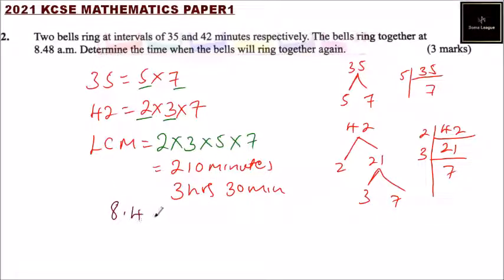You add 3 hours here and 30 minutes here. When you add the minutes, you get 78 minutes. Since one hour is 60 minutes, you carry one hour to the hours column. These become 12 hours, and 18 minutes remain.